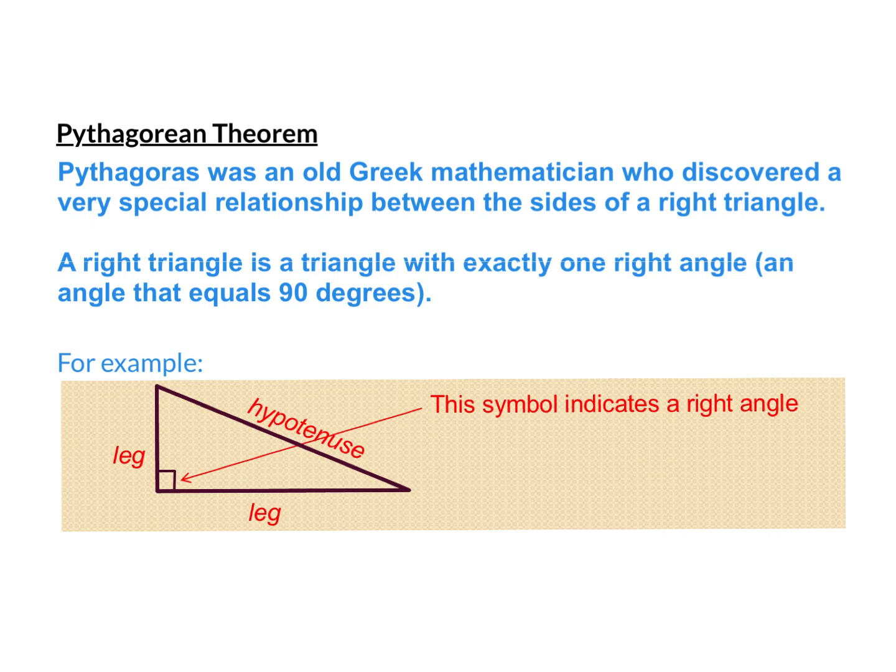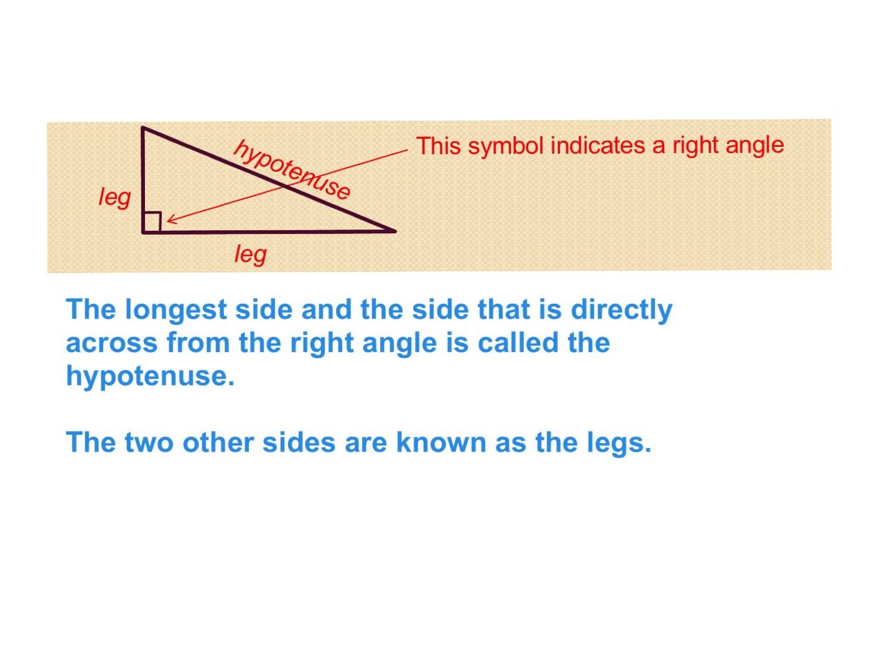Now, there's some notation here. And on the next slide, I'm going to talk about those things. Okay, so here's that triangle and the same picture. The longest side that is directly across from the right angle is called the hypotenuse.